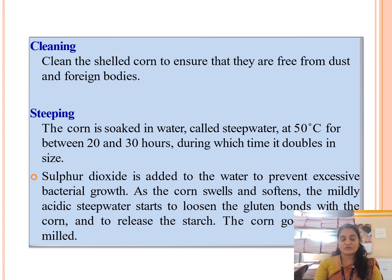The cleaning process in wet milling is the same as in dry milling — removal of any foreign particles or the shell of the corn. The key difference is that in dry milling, after cleaning the corn goes to conditioning, whereas in wet milling, after cleaning the corn goes to the steeping process.